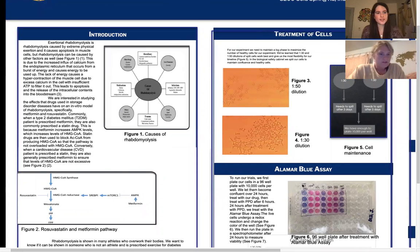So exertional rhabdomyolysis is rhabdomyolysis that's caused by extreme physical exertion. However, there are a lot of other causes of rhabdomyolysis that you can see in our first figure. It can be hereditary, it can be caused by trauma, and it can also be caused by medication. And that's kind of what we're looking at.